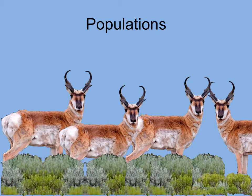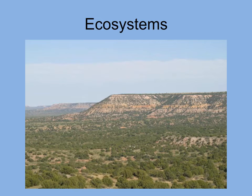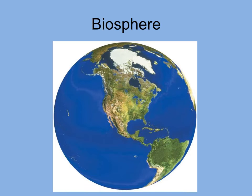A group of organisms of the same species is a population. Organisms capable of breeding with one another to produce viable offspring are in the same species. A collection of different species that interact in a certain area is called a community. The pronghorn, insects, junipers, and grasses belong to this West Texas community. A community plus the non-living components — such as water, minerals, soil, and climate — is an ecosystem. And last, all living things on the planet make up the biosphere.